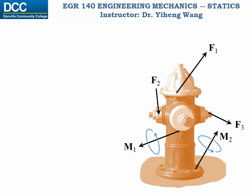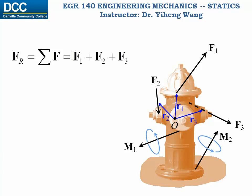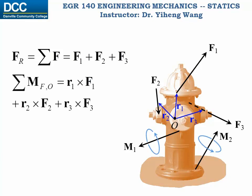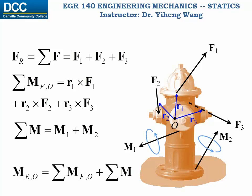Let's imagine the fire hydrant is subjected to multiple forces and multiple couple moments acting on multiple points. We want to replace all of these by a single force and a single couple moment placed at a certain point, say point O. The single force is simply the resultant force of all the original forces, easily calculated through vector addition. For the resultant moment, we first calculate the individual moment caused by each force about point O, add them together, then add all of the free couple moments together — in this case M1 and M2 — and then add the total moment from the forces and the total couple moments together to get the total moment at O.